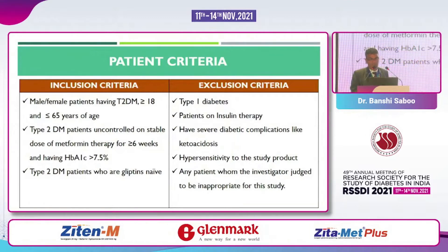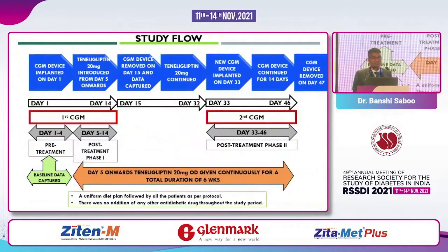Inclusion criteria: male and female type 2 diabetic patients aged 18–65 years, on metformin for more than 6 weeks at stable dose, HbA1c uncontrolled at more than 7.5%, and glyptin-naive.